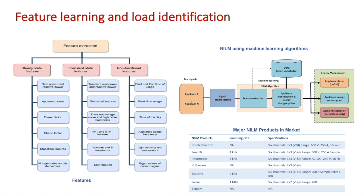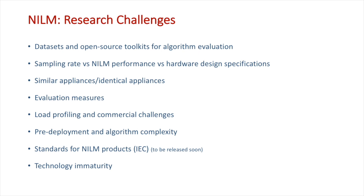The major NILM products in the market are listed in this table. Different sampling rates have been used for different NILM products, and Sense is having a 1 megahertz sampling rate for monitoring appliances using the NILM technique. Sense is also very popular among the different NILM products in the market.